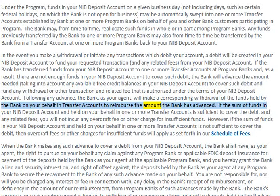When the bank makes any such advance to cover a debit from your NIB deposit account, the bank shall have, as your agent, the right to pursue on your behalf any claim against any program bank or applicable FDIC deposit insurance for payment of the deposits held at the applicable program bank. You hereby grant the bank a lien and security interest on and right of offset against the deposits held by the bank as your agent at any program bank to secure repayment of any such advance made on your behalf. You are not responsible for, nor will you be charged any interest or fee in connection with, any delay in the bank's receipt of reimbursement from program banks. The bank's recourse for such reimbursement is limited to withdrawal or recovery on claims related to deposits held by the bank as your agent at any program bank.